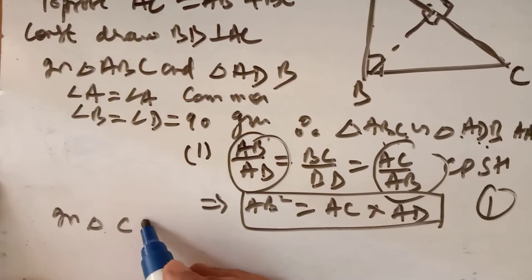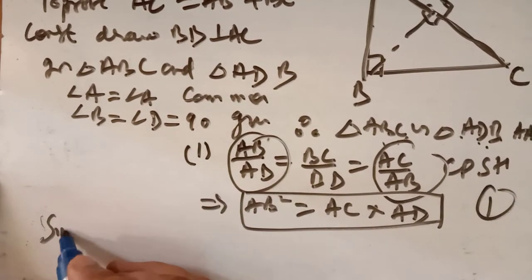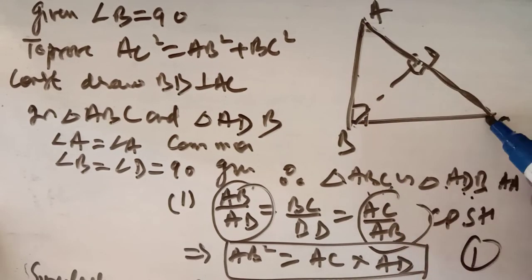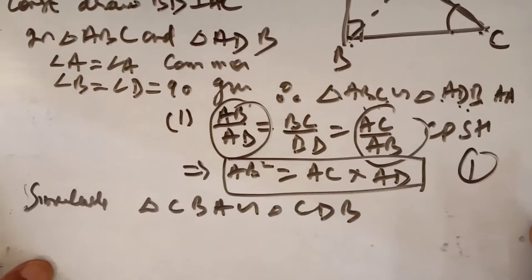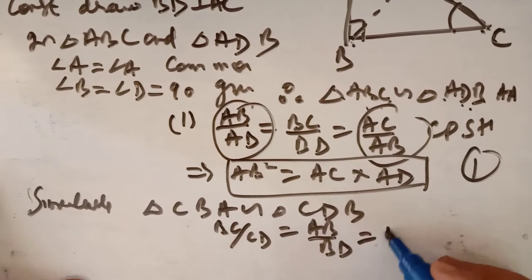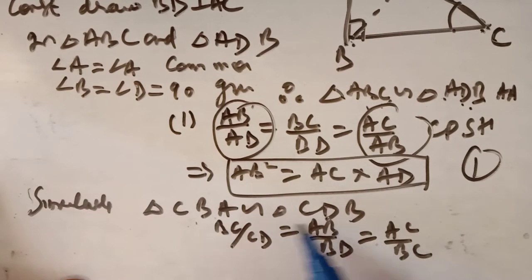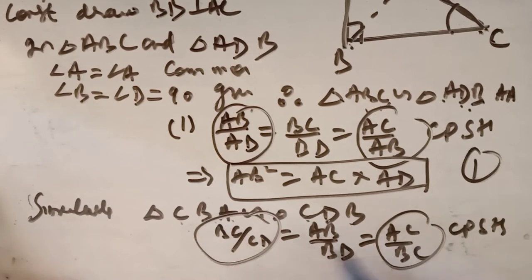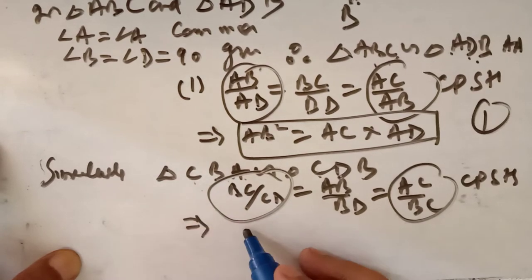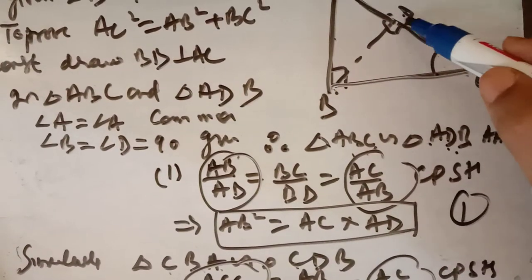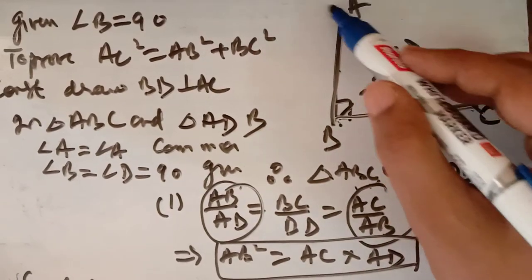Similarly, we can prove that triangle CBA is similar to triangle CDB. Angle C is common; angle ABC in CBA is 90 degrees and angle CDB equals 90 degrees. So from this similarity: BC/CD = AB/BD = AC/BC, giving BC² = AC · CD. Learn this result as well — BC² = AC · CD. Let us call this Step 2.